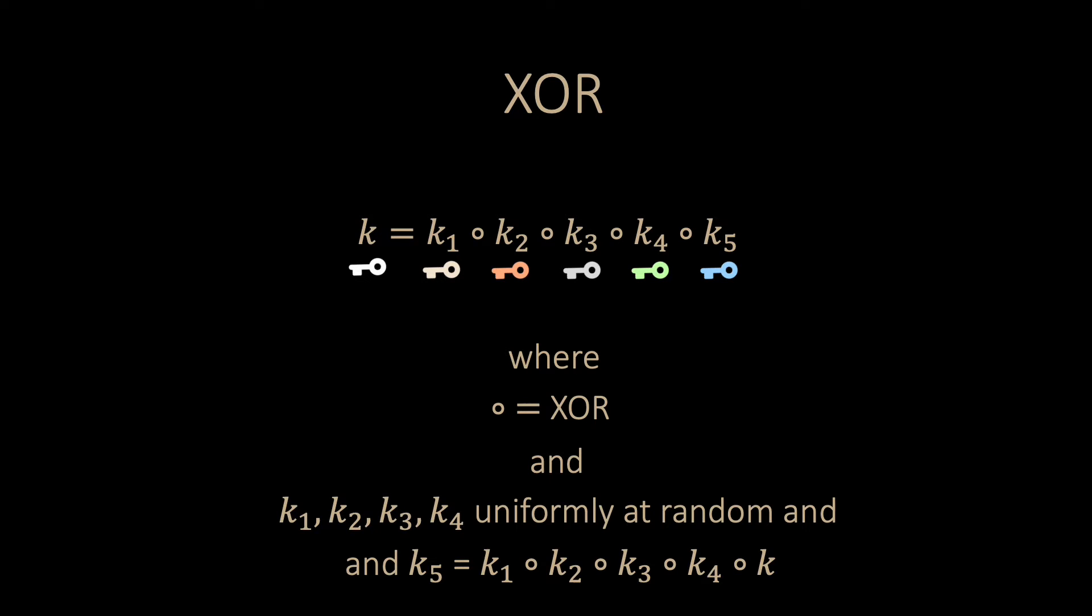All keys are chosen uniformly at random, where one of the keys, for example K5, is chosen suitably so that the XOR of all of them results exactly to K.